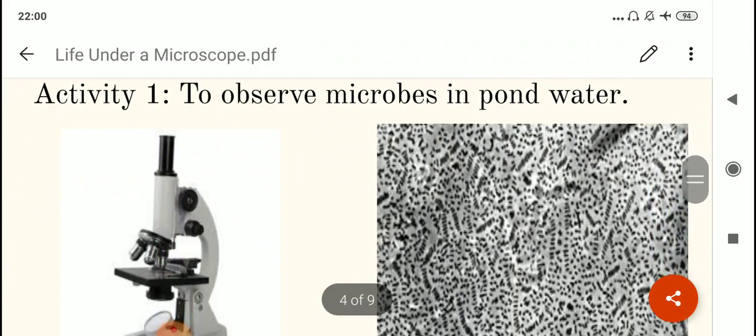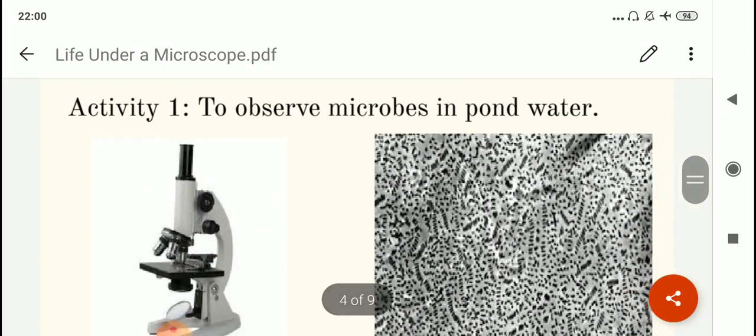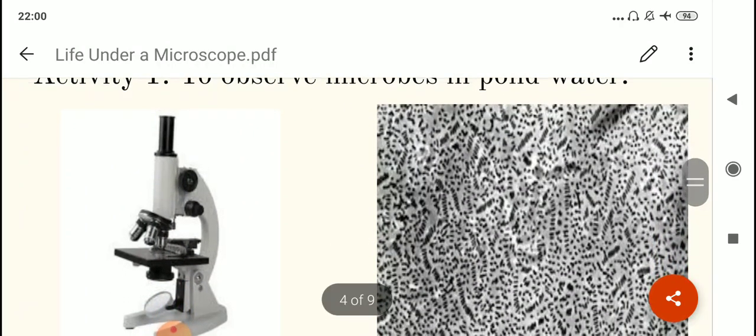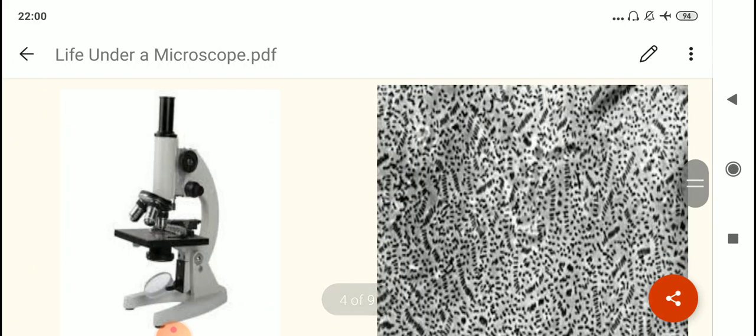This activity children is there in your book. You see this to observe microbes in pond water. The first image is of a compound microscope. This is a light microscope which is very easily found in each and every laboratory. So at the top there is eyepiece and then there are some objective lens in the middle. So the slide which is containing the sample is kept on this black disc and then it is observed from the top.